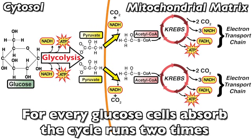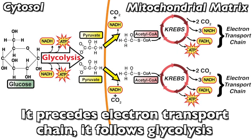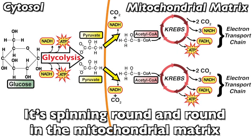For every glucose cells absorb, the cycle runs 2 times. As long as cells get fuel, Krebs is running just fine. It precedes electron transport chain, it follows glycolysis. It's spinning round and round in the mitochondrial matrix.